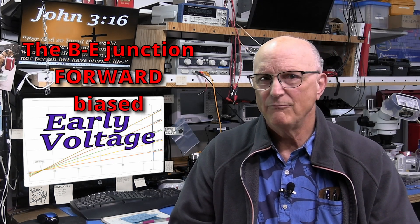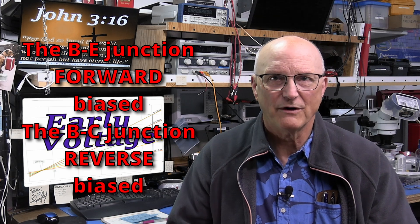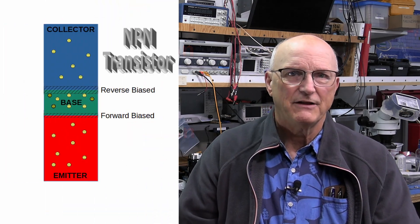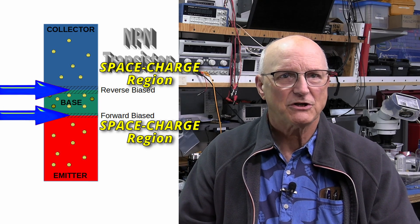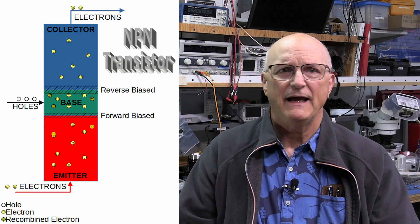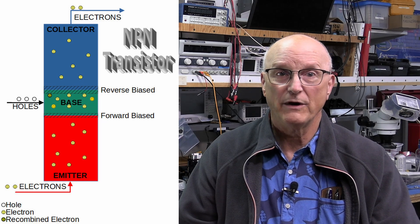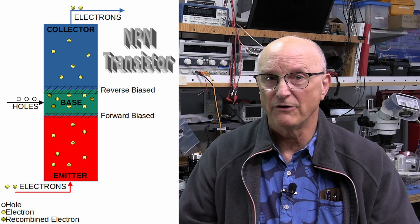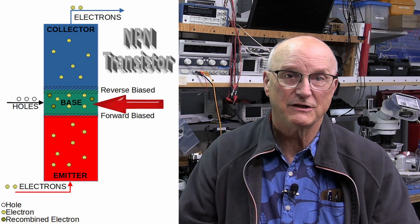Voltage only affects the operation of the BJT in so much as it affects the current associated with the device. We also have to remind ourselves that in the normal linear region of operation, the base-emitter junction is forward biased and the base-collector junction is reverse biased. As such, there is a space charge region around each of these junctions. These space charge regions do not allow for recombination of current carriers. As the current carriers cross the base-emitter junction, some percentage of them recombine in the base material,